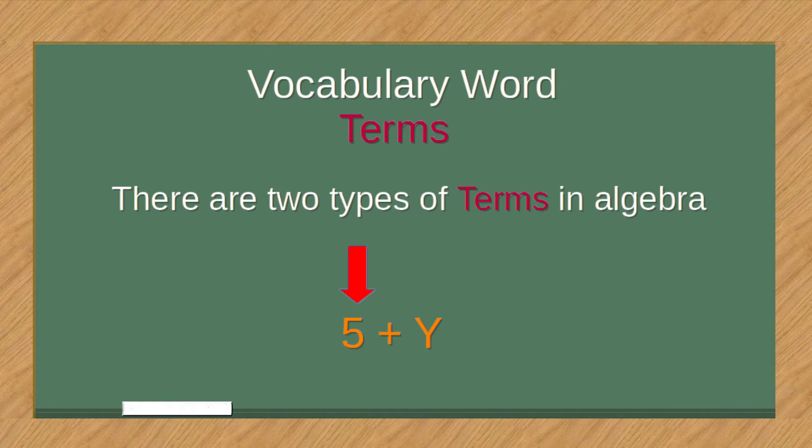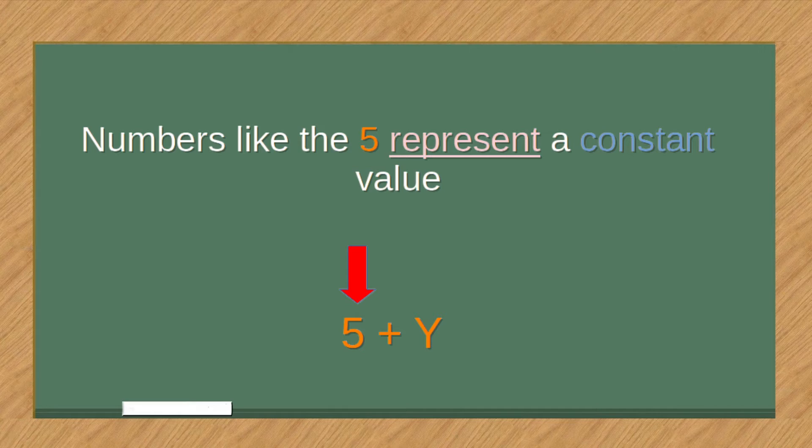Vocabulary Word: Terms. There are two types of terms in algebra. Numbers, like the 5, represent a constant value.